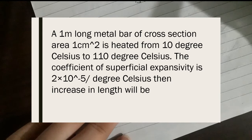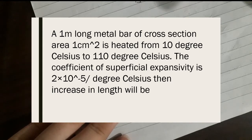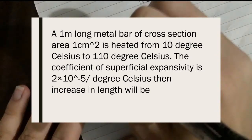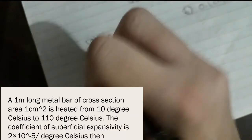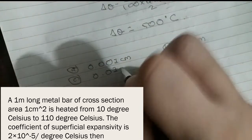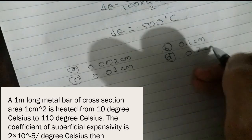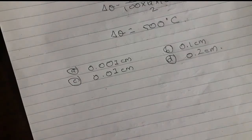Question 5: A metal rod of cross-section area 1 cm² is heated from 10 degrees Celsius to 110 degrees Celsius. The coefficient of superficial expansivity is 2 × 10⁻⁵. How much does the length increase? Options: A) 0.001 cm, B) 0.1 cm, C) 0.01 cm, D) 0.2 cm. If you have the answer, please comment.